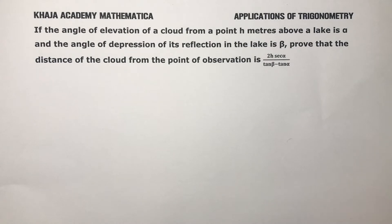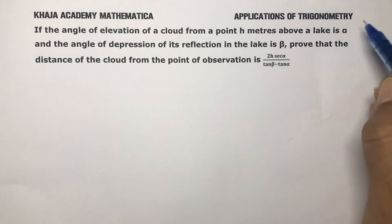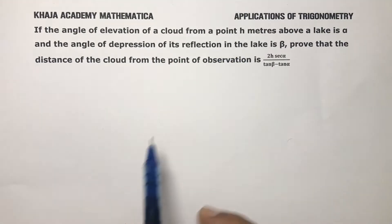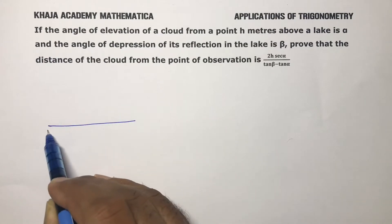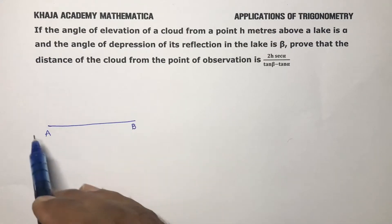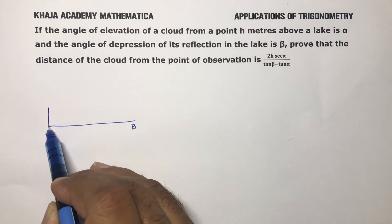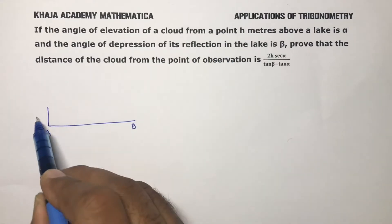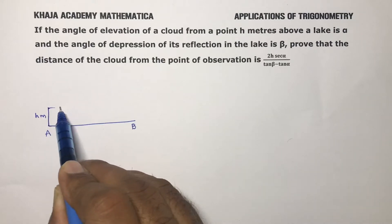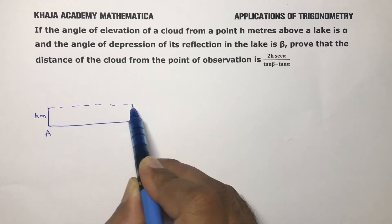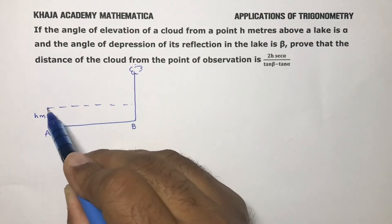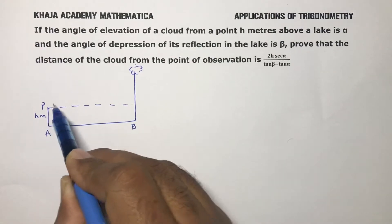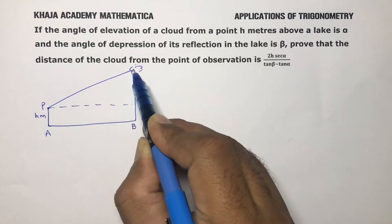If the angle of elevation of a cloud from a point h meters above a lake is alpha, and the angle of depression of its reflection in the lake is beta. Here I'll take AB as the lake. The angle of elevation of a cloud from this point is h meters. I'll draw a horizontal surface and take a cloud — the angle of elevation of a cloud from this point is alpha.